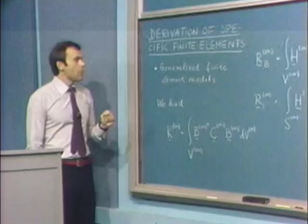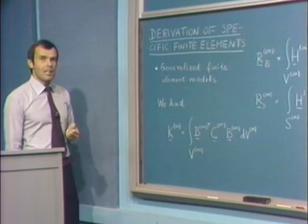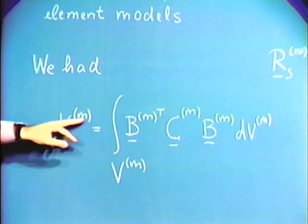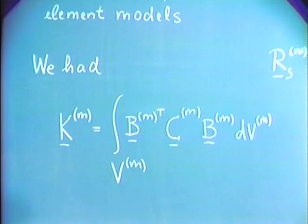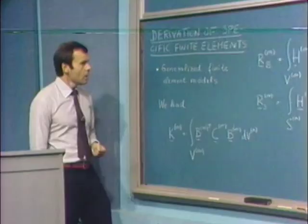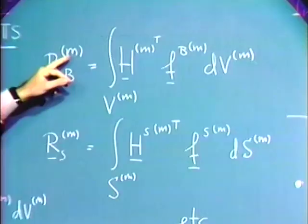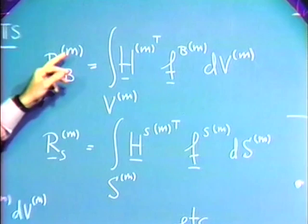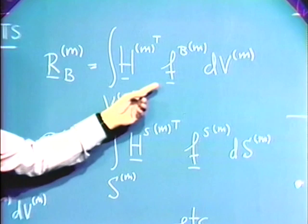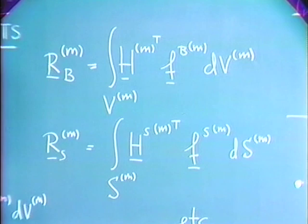Let's recall what we arrived at in the last lecture. We had that the element stiffness matrix for element M is obtained by integrating the product of a strain-displacement matrix times a stress-strain matrix times the strain-displacement matrix over the volume of the element. We also derived the expression for a body force vector R_b for element M, integrating over the volume the product of the displacement interpolation matrix times the body forces.